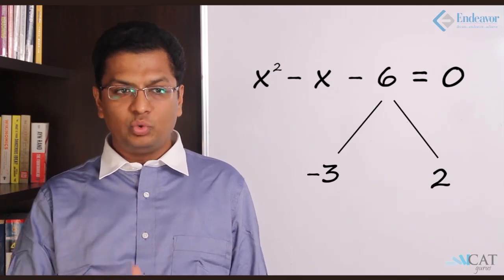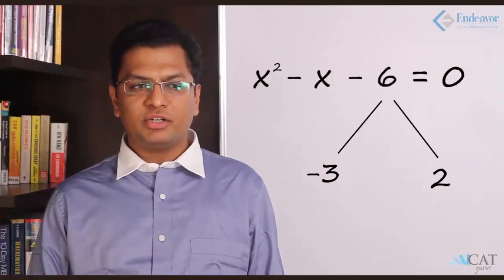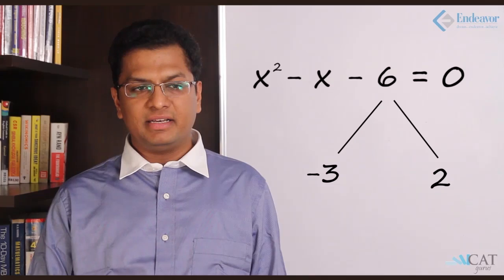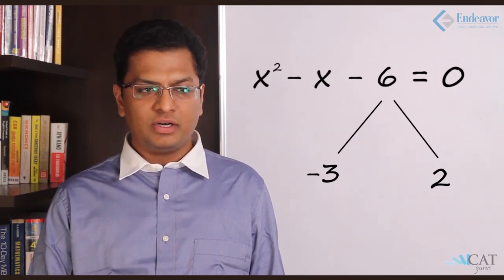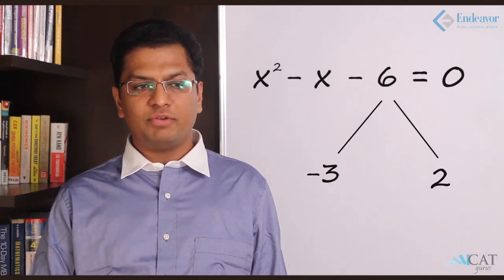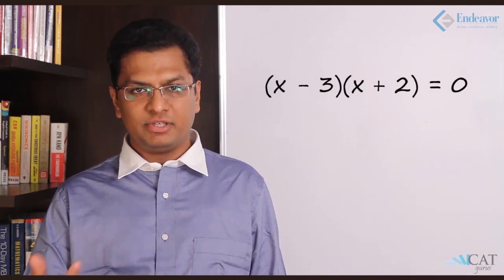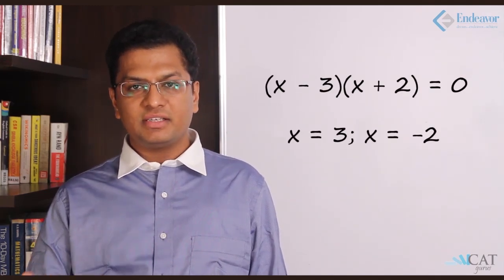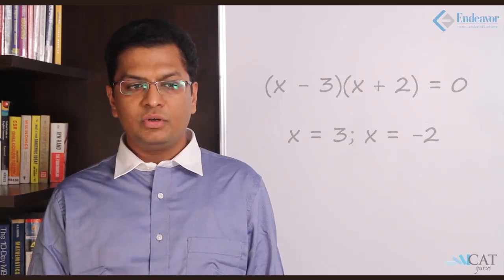6 has two factors: 2 and 3. The product of +2 and -3 is -6, and the sum of +2 and -3 is -1. So we get what we wanted. Hence the equation comes down to (x - 3)(x + 2), which gives us the answers x = 3 and x = -2.